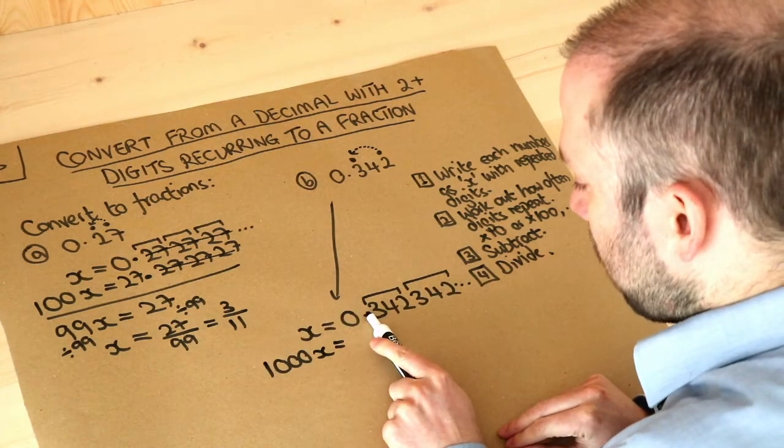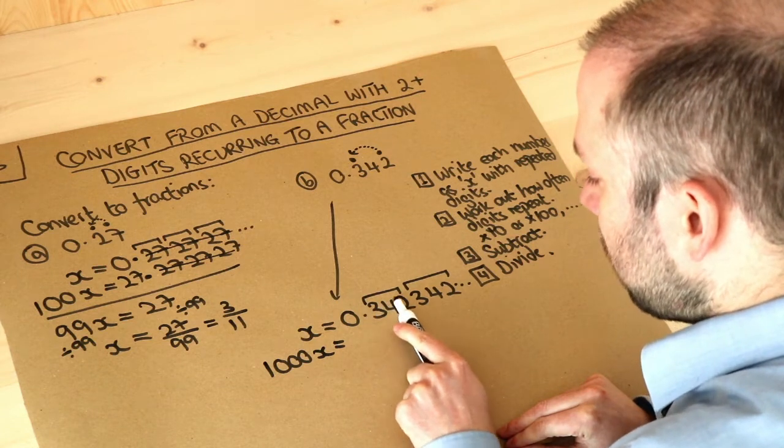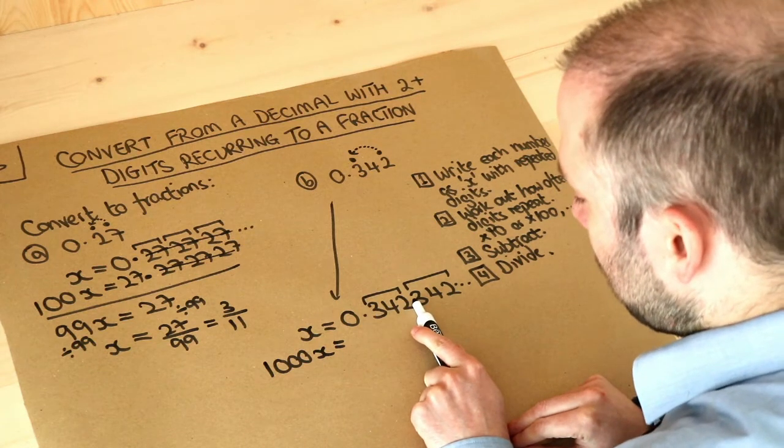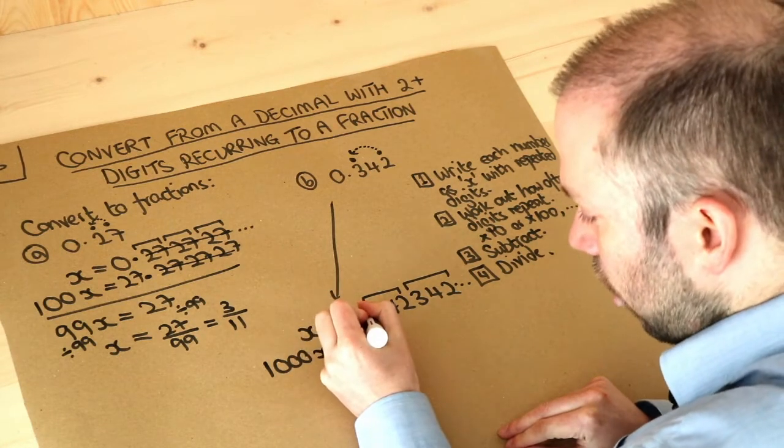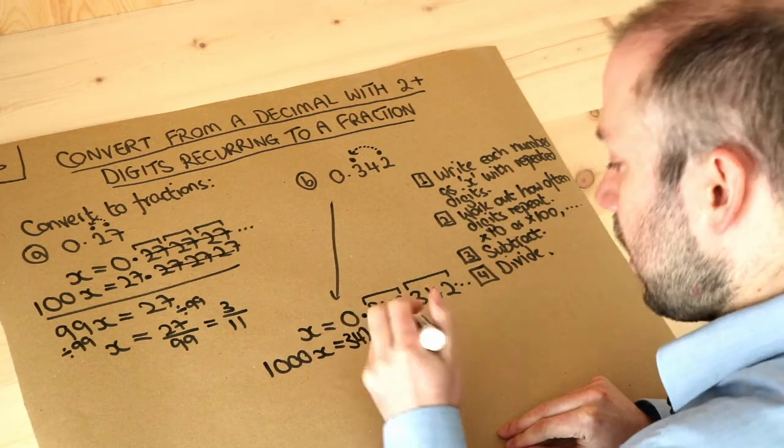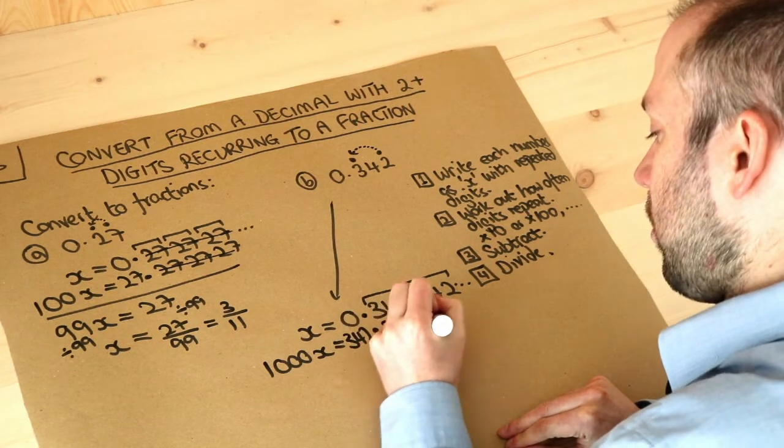So if we times this by a thousand, the decimal point moves three places to the right, one two three, so it's 342.342, etc. So 342, again making sure you line up these decimal places, point 342 342, etc.